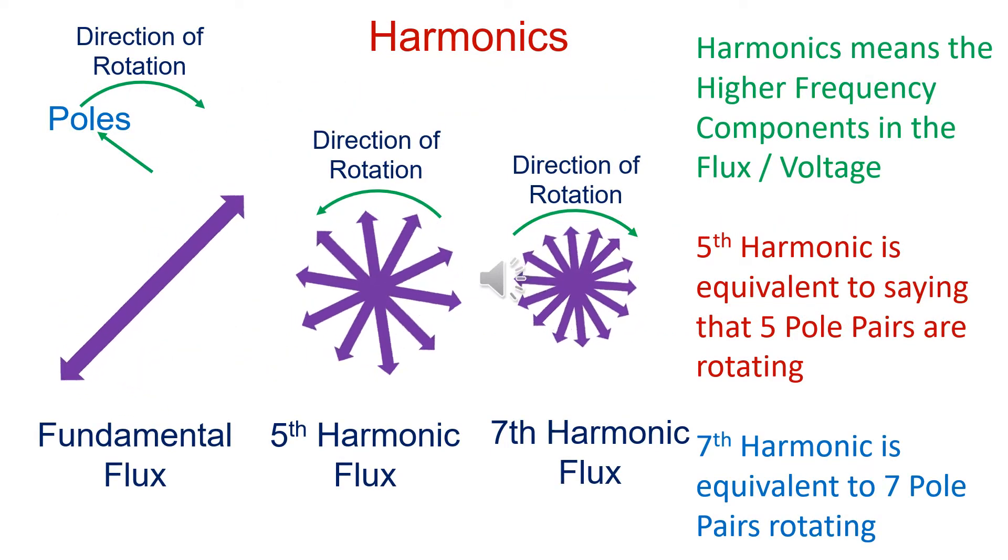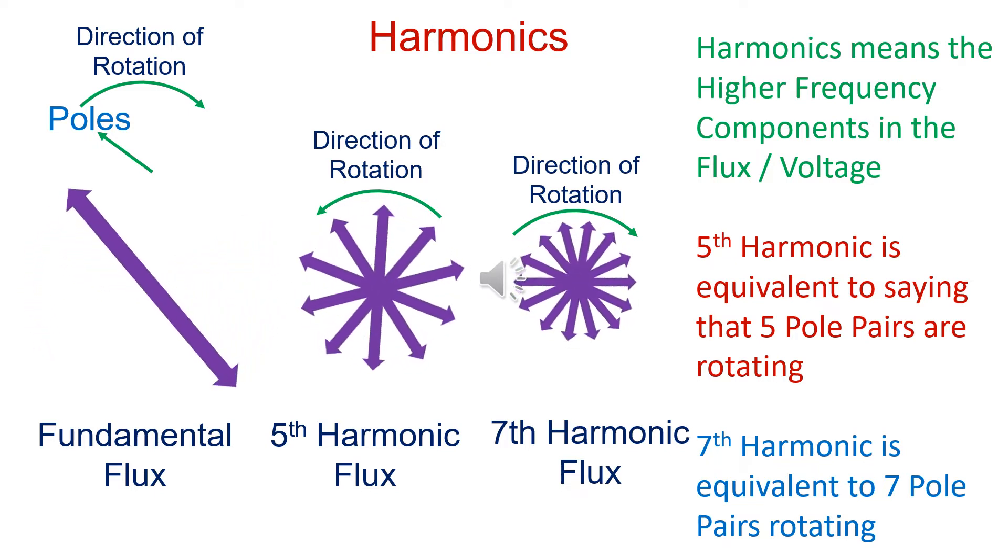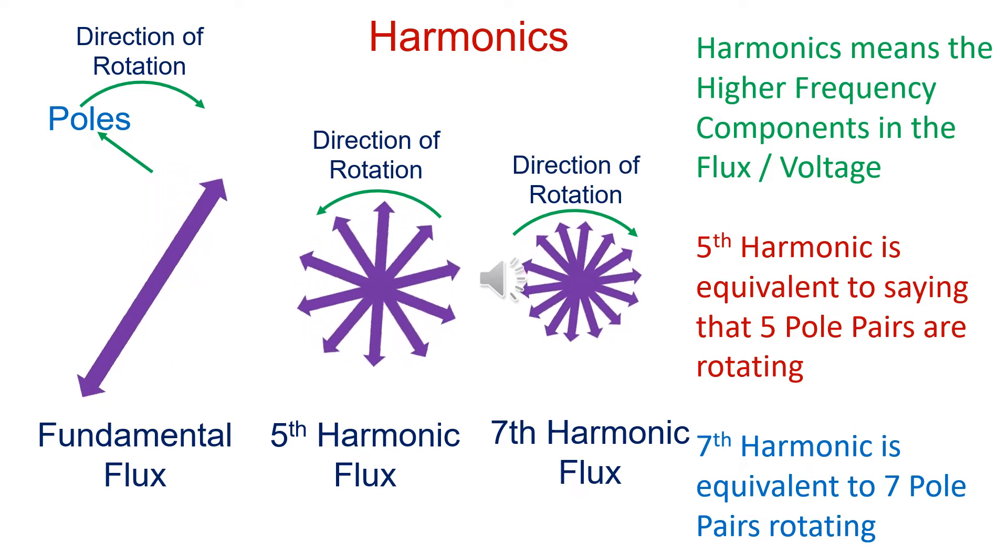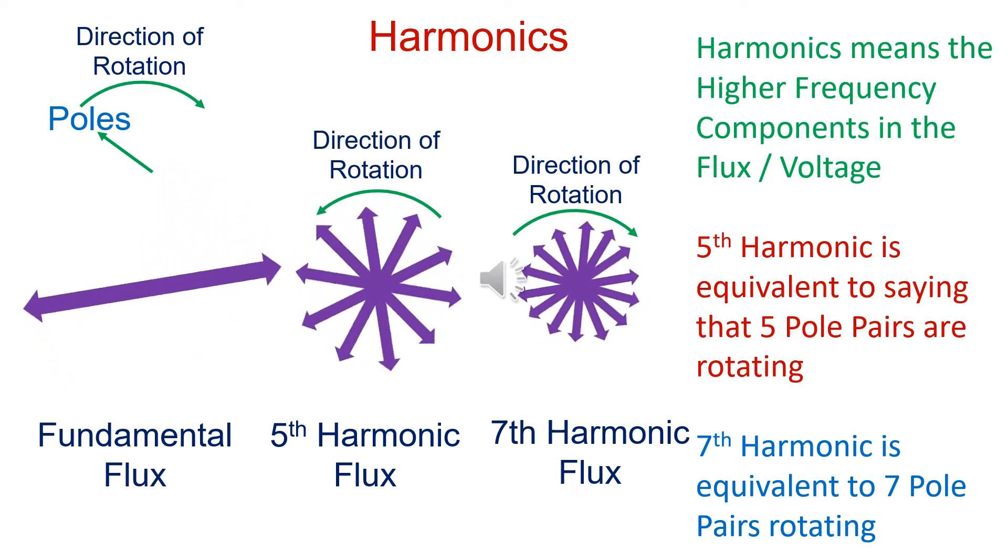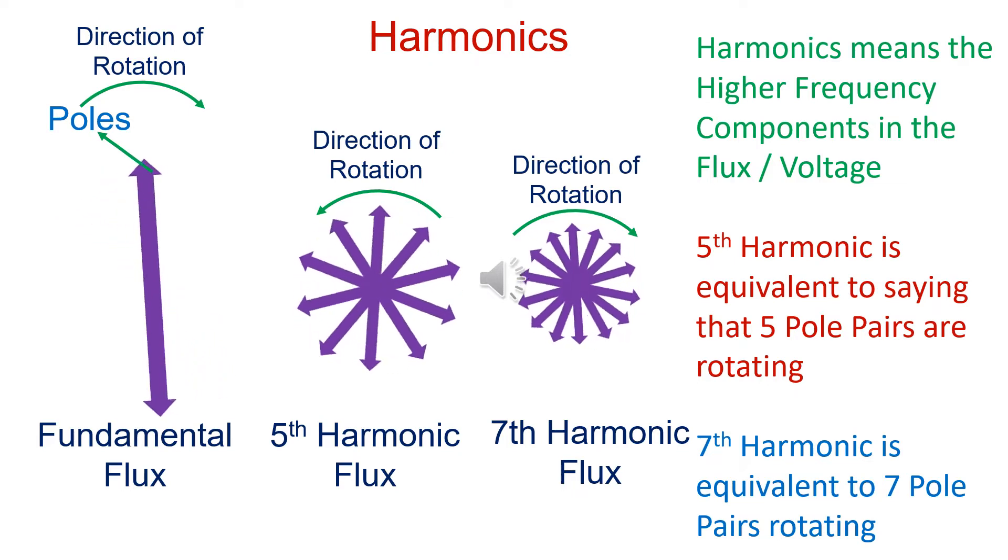Harmonics mean higher frequency components in the voltage waveform. In case of fifth harmonic, five pole pairs are produced. They are rotating opposite to the main flux. In the seventh harmonic, seven pole pairs are rotating in the same direction of the main flux.